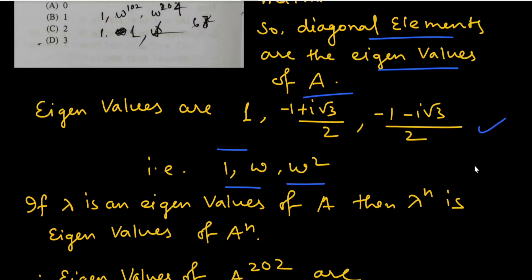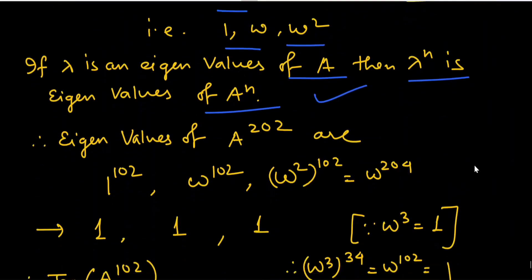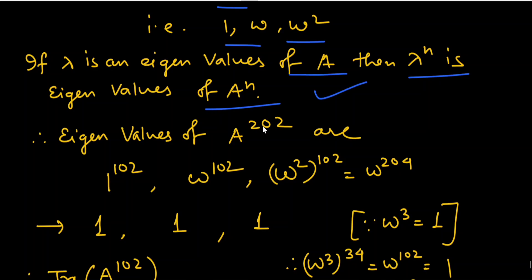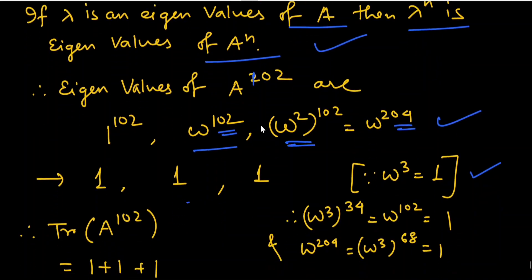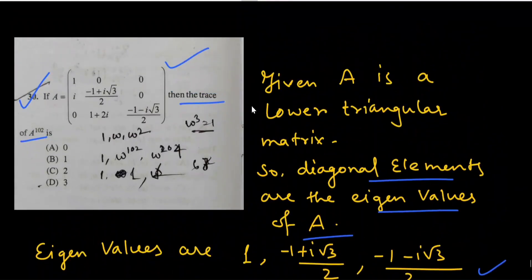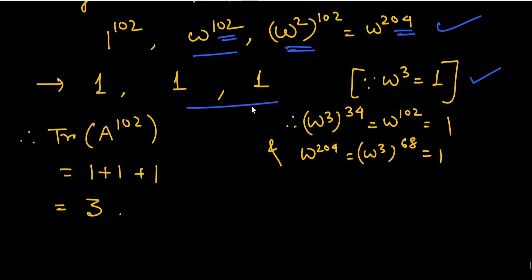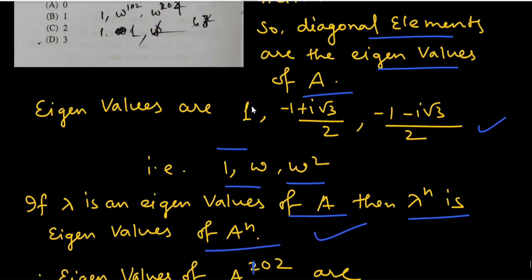We use the result that if λ is an eigenvalue of A, then λ^n is an eigenvalue of A^n. So the eigenvalues of A^102 are 1^102, ω^102, and ω^204. Since ω³ = 1 and both 102 and 204 are multiples of 3, all three eigenvalues equal 1. Therefore the trace of A^102, which equals the sum of eigenvalues, is 3.